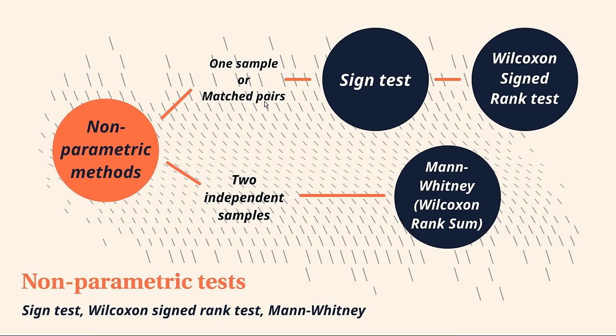Now, an example of a matched pair scenario might be where you've sampled the same people before and after some kind of intervention. So you technically have two samples of data, but because they're matched, you can actually construct the differences between the two. So say, the improvement in some numerical measure. And in that way, you're constructing almost a single sample of differences. So hopefully you can see that that would be very similar to just having a single sample in the first place. So that's why either of these scenarios are technically the same.